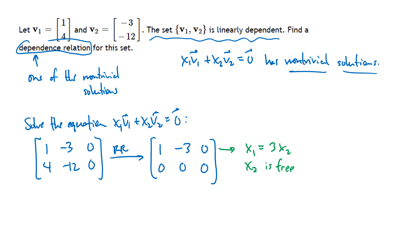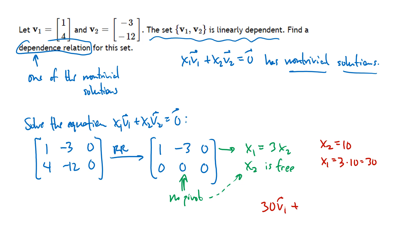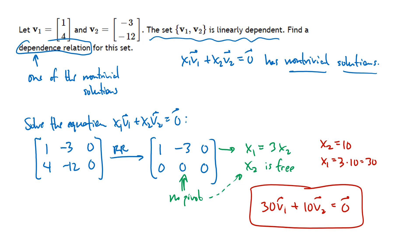To find a specific non-trivial solution, we just pick a value for x2. Let's pick x2 = 10, which gives x1 = 3 × 10 = 30. So one dependence relation is 30·v1 + 10·v2 = 0. That is just one of many possible dependence relations for this set.